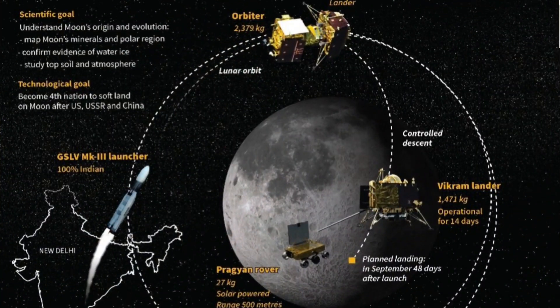Chandrayaan 2 had three parts: the first part is the Orbiter, then there is a Lander, and the Lander carries a Rover. The Orbiter was successful and remains in orbit around the moon as a satellite.